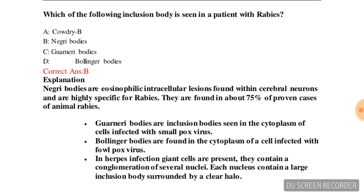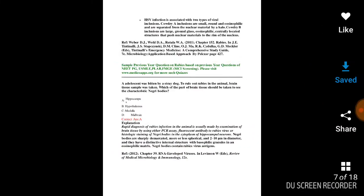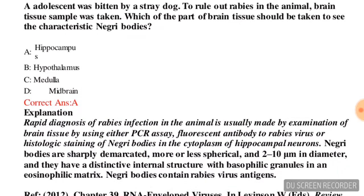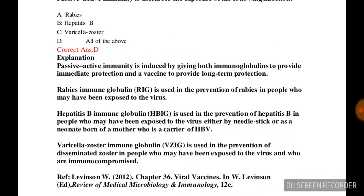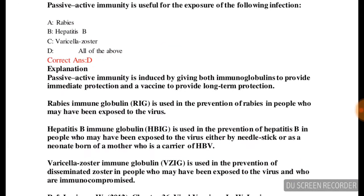Next question: an adolescent was bitten by a stray dog. To rule out rabies, a brain tissue sample was taken from the animal. Which part of the brain tissue should be taken to see the characteristic inclusion bodies? Options are: hippocampus, hypothalamus, medulla, or midbrain. The correct answer is option A — hippocampus.